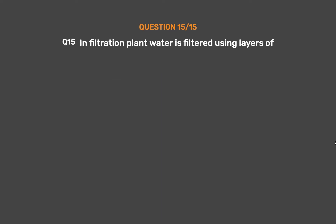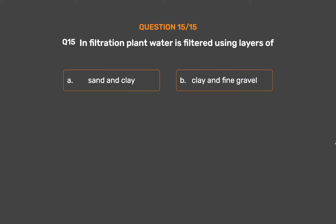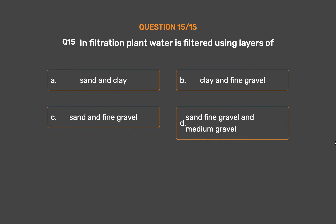Question Number 15. Infiltration plant water is filtered using layers of. Option A: Sand and Clay. Option B: Clay and Fine Gravel. Option C: Sand and Fine Gravel. Option D: Sand, Fine Gravel and Medium Gravel.